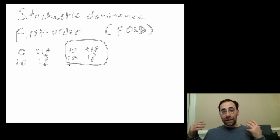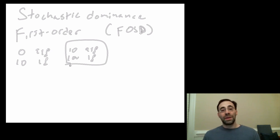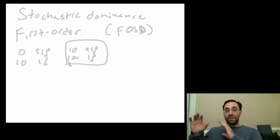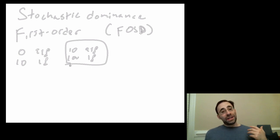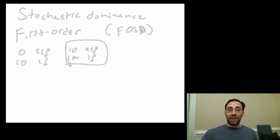What that means is, for anyone who prefers more of something — in this case money — the second lottery is more likely to give you more money than the first lottery. Therefore, for anyone who prefers more of something, the second lottery is strictly better than the first. You would always choose the second lottery over the first. It doesn't matter what your preferences are, as long as you want more of something. You can be risk-averse, risk-seeking, whatever — you always choose the second lottery. It's pretty obvious here because every possible outcome is better.